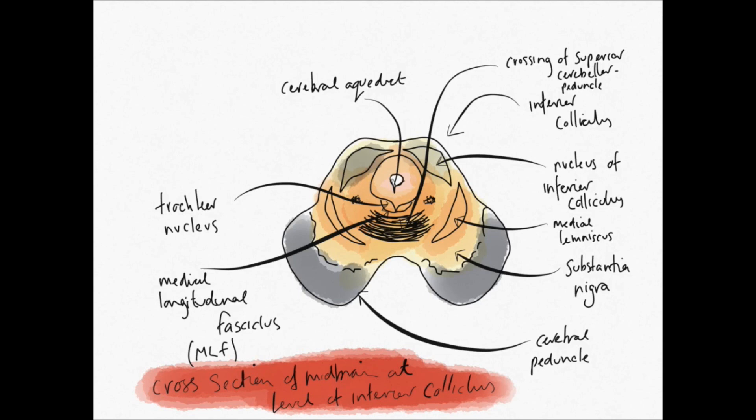It's the cerebral peduncle. This is, of course, the grey area at the front here. These are descending, mainly corticospinal tract fibres. But we can recognize some differences. We have in here the medial longitudinal fasciculus as well.